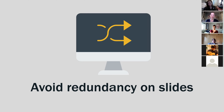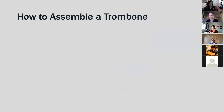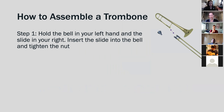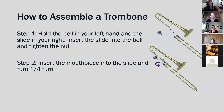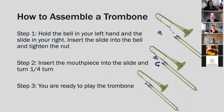So, avoid redundancies on slides. This is some of what you saw in the first clip, but we're going to give you another example. I'm from a music background, so you're getting a music example here. I'm going to teach you how to assemble a trombone. First, you're going to take that trombone, put the bell in your left hand and the slide in your right. You want to insert the slide into the bell and then tighten the nut at the top. For the next step, insert the mouthpiece into the slide and turn it one quarter turn, and you are now ready to play your trombone.